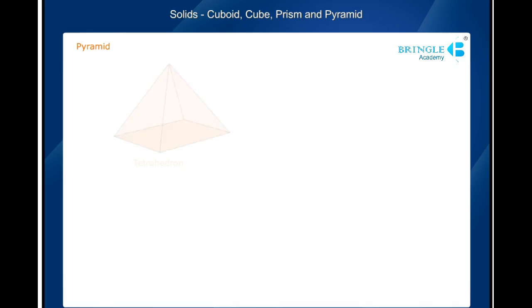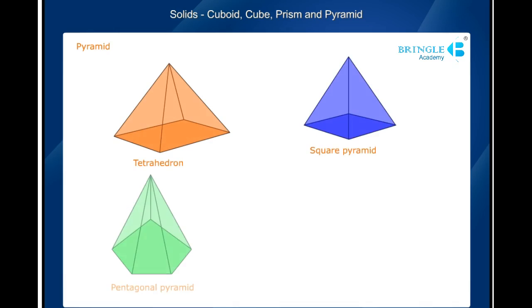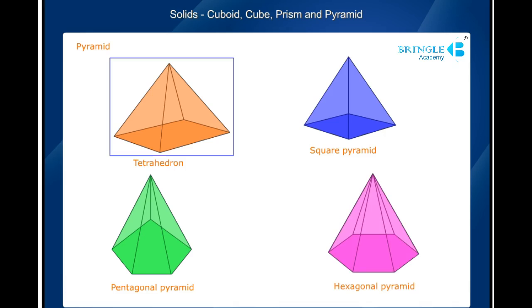According to its base being a triangle, a square, a pentagon, and a hexagon, a pyramid is called a tetrahedron, a square pyramid, a pentagonal pyramid, and a hexagonal pyramid, respectively. Thank you very much.